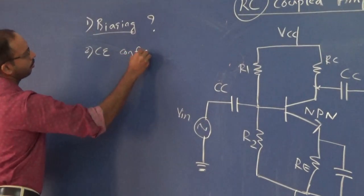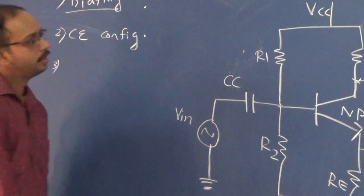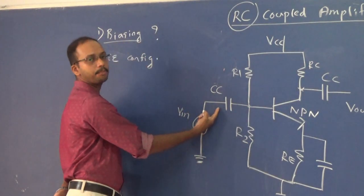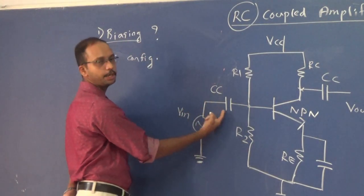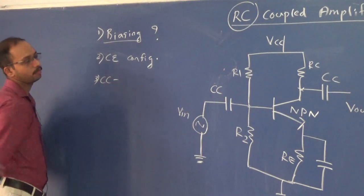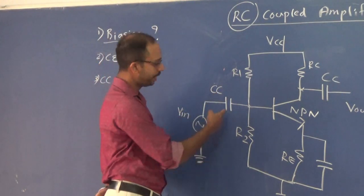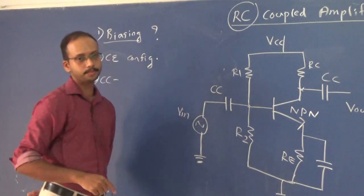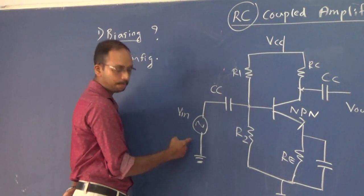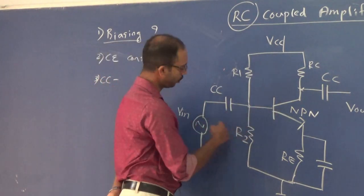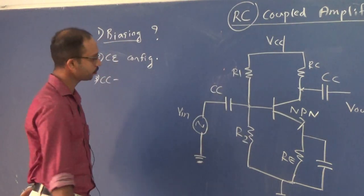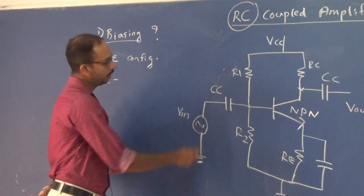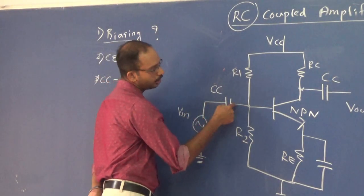In this circuit diagram we can see two coupling capacitors. The first is the input coupling capacitor CC, also called a coupling capacitor or blocking capacitor. It is used to couple the input voltage to the circuit — specifically to the base of the NPN transistor — and it also blocks DC, allowing only the AC input signal to reach the base terminal.